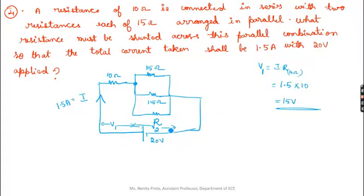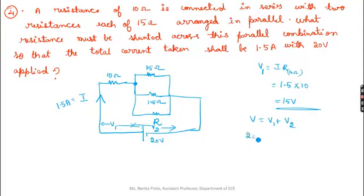Now that V1 = 15V is known, you can find V2. Since V = V1 + V2 and V = 20V, we get 20 = 15 + V2, so V2 = 5V.